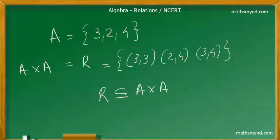Let us look at a very simple example of set A having elements 3, 2, 4. The Cartesian product of set A with itself gives rise to a relation having 3 ordered pairs, that is 3, 3, 2, 4, and 3, 4.